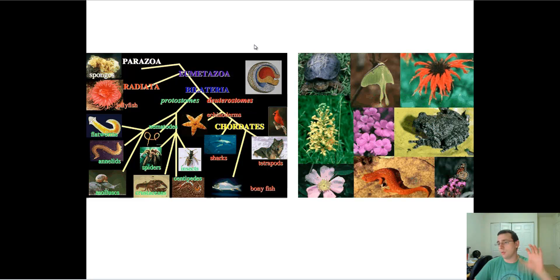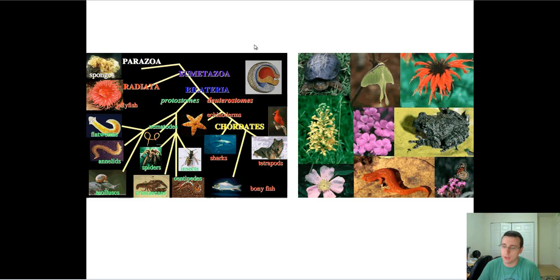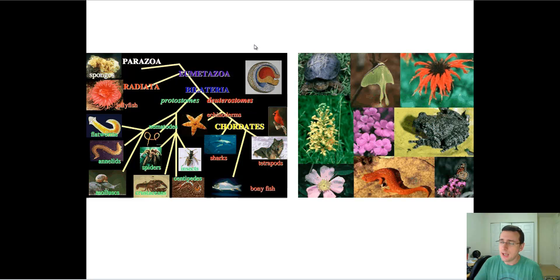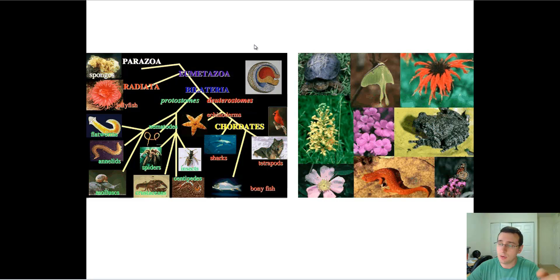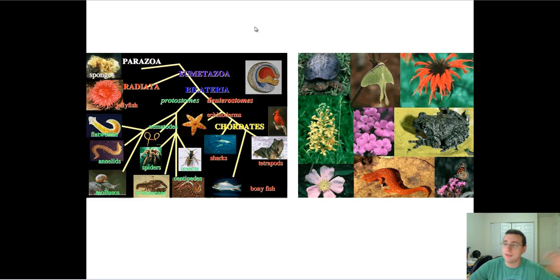In a way, we all share things, but in a way, we are also different from each other. And that means that life has both unity and diversity, and all of it is explained by the theory of evolution. We have unity because we share common ancestry. We have diversity because we adapt differently to the environment across many generations.